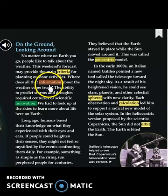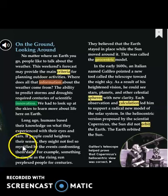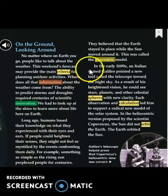The ability to predict storms and droughts required centuries of scientific innovation — innovation meaning new inventions. We had to look up at the skies to learn more about life here on Earth. Long ago, humans based their knowledge on what they experienced with their eyes and ears. If people could heighten their senses, they might not feel so mystified — meaning confused — by the events confronting them daily. For example, something as simple as the rising sun perplexed people for centuries. They believed that the Earth stayed in place while the sun moved around it.